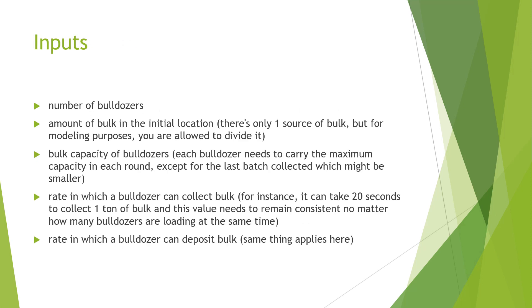Now let's talk about the inputs. The first is the number of bulldozers — you should be able to use any number in the simulation. The second is the amount of bulk in the initial location. There is supposed to be only one source of bulk, but for modeling purposes you can divide it if you want, as long as it's flexible and consistent.